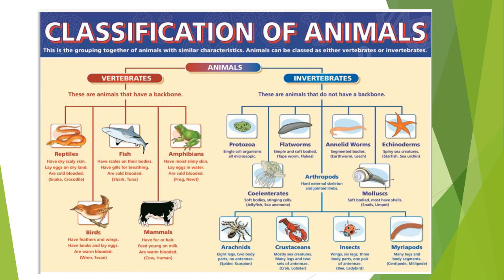Before knowing about the origin of insects, let's look into the classification of animals. Classification means the grouping of organisms or animals based on some similar characteristics.